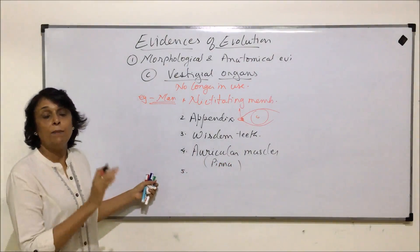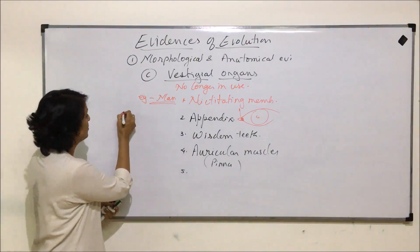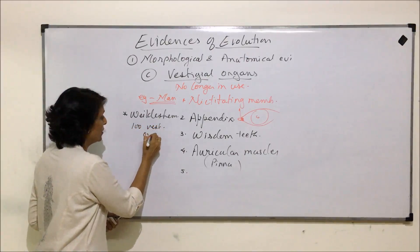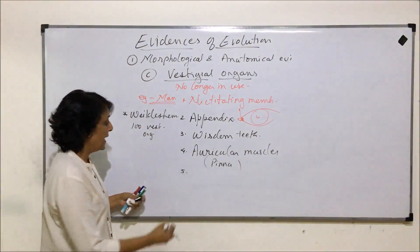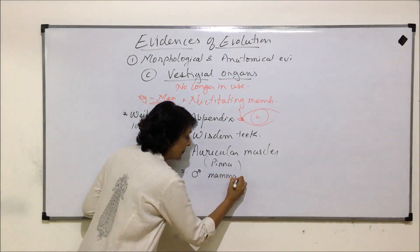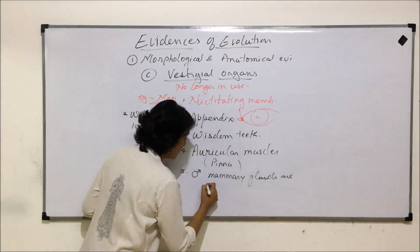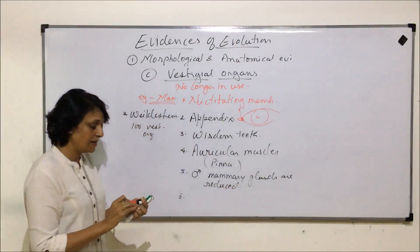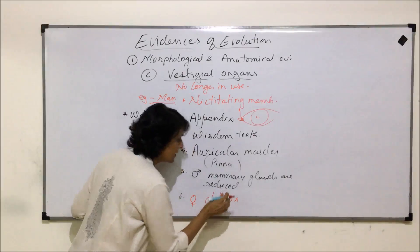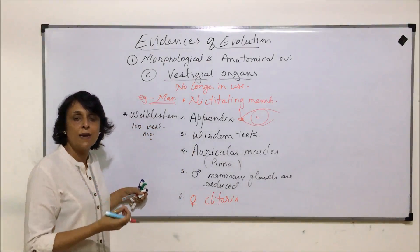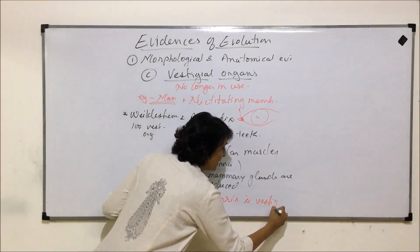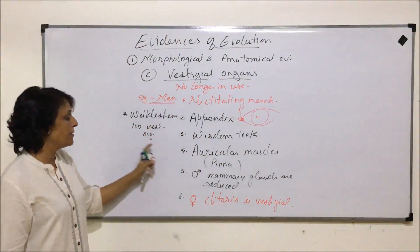There are about a hundred vestigial organs in human beings, according to scientist Wilder Shem. A few more examples: in males, the mammary glands are highly reduced. In females, the clitoris is considered vestigial — it is a rudiment that originated from the same structure as the penis in males. So in human beings, out of a hundred vestigial organs, we have discussed just a few.